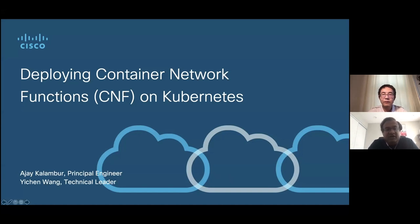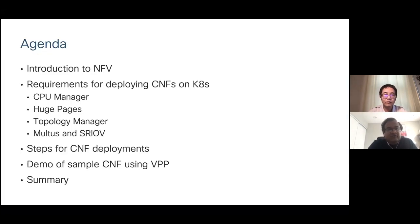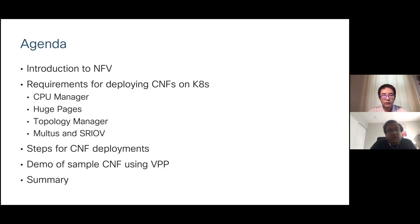Today we're going to share our experiences on deploying container network functions on Kubernetes. The high-level agenda is: we'll start with an introduction to NFV, then talk about the requirements for deploying container network functions on Kubernetes. We'll cover features like CPU manager, huge pages, topology manager, and Multus and SRIOV. Then we'll talk about the steps to bring all these features together and do a sample Kubernetes deployment, concluding with a demo of a sample CNF that leverages each of these features.